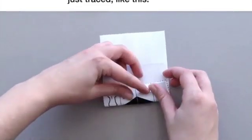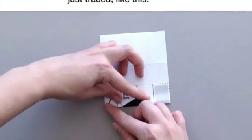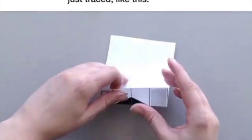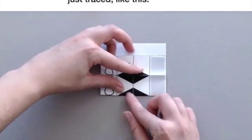Turn your paper over. Then fold all six lines you just traced like this. Make a good crease on each fold. The better you fold, the better your robot finger will work.